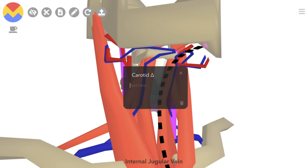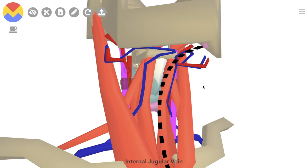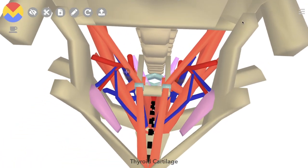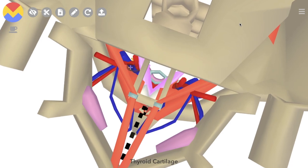It also contains nerves, namely the sympathetic chain and cranial nerves nine, ten, eleven, and twelve. If we take a look through here, we can see it contains part of the larynx and pharynx, as well as part of the thyroid gland.